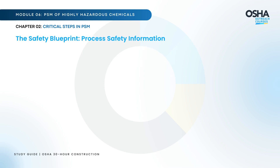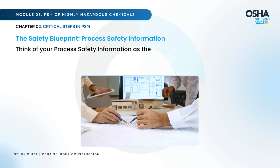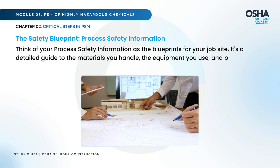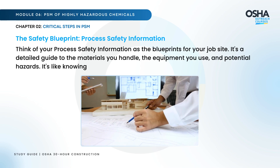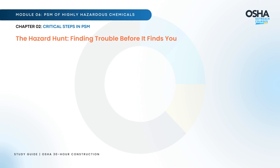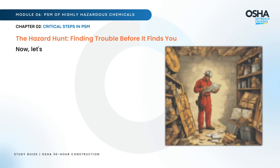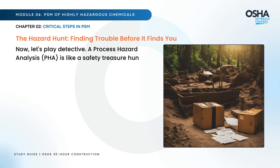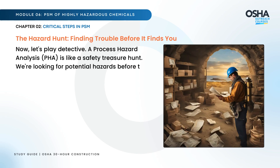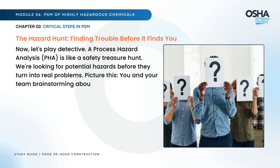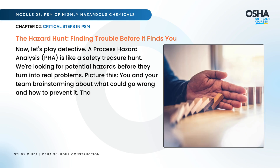The safety blueprint: Process Safety Information. Think of your process safety information as the blueprints for your job site — a detailed guide to the materials you handle, the equipment you use, and potential hazards. It's like knowing your tools before you start building. Next, the hazard hunt: a Process Hazard Analysis is like a safety treasure hunt, where you and your team brainstorm what could go wrong and how to prevent it.